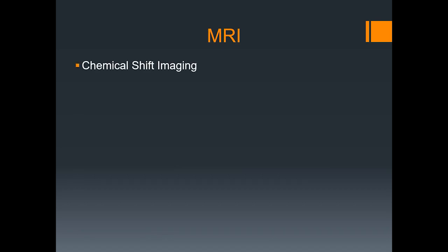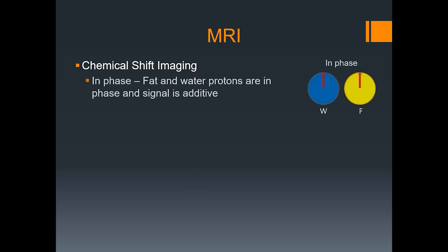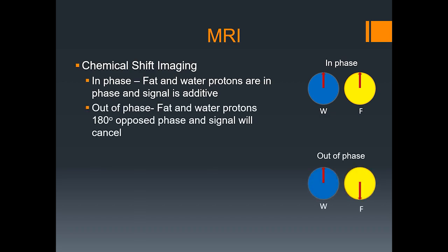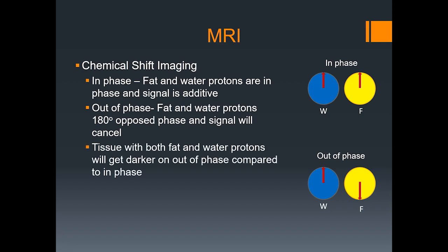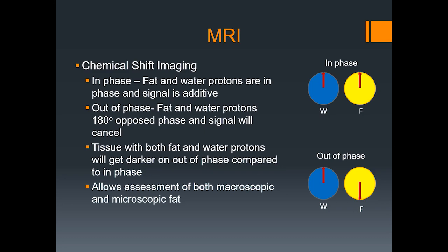Let's discuss MRI. The mainstay of MRI imaging of the adrenal glands is chemical shift imaging. The in-phase is acquired when fat and water protons are precessing in-phase, and the signal is additive. The out-of-phase is acquired when fat and water protons are 180 degrees out-of-phase, and therefore the signal will cancel. Any tissue that has both fat and water protons will get darker on the out-of-phase compared to the in-phase, allowing assessment of both macroscopic and microscopic fat.